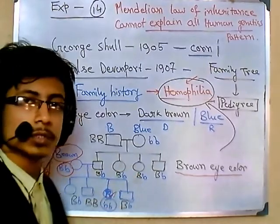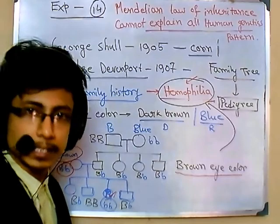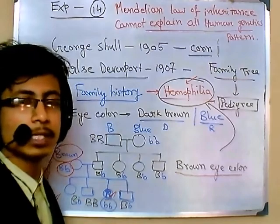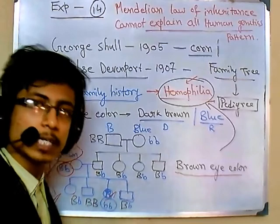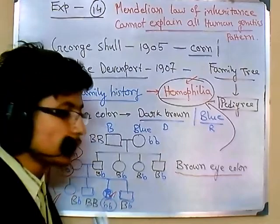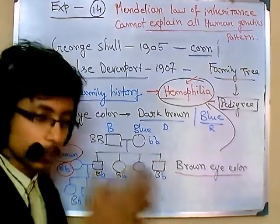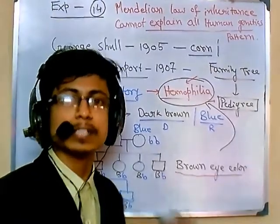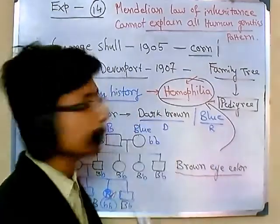But in the case of hemophilia and diseases like color blindness, the genes for those conditions are actually present in sex chromosomes instead of somatic chromosomes. That is why those traits are not properly explained by Mendelian inheritance. Traits linked with sex chromosomes are not explainable using Mendelian inheritance.